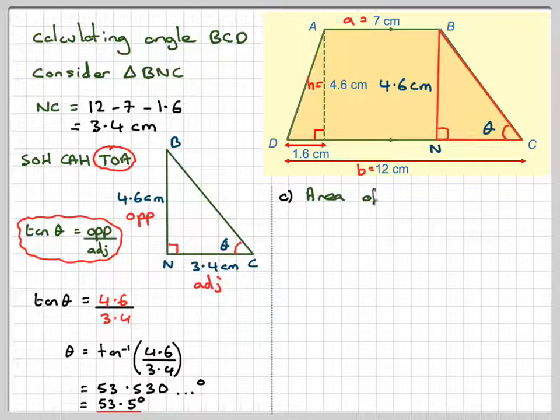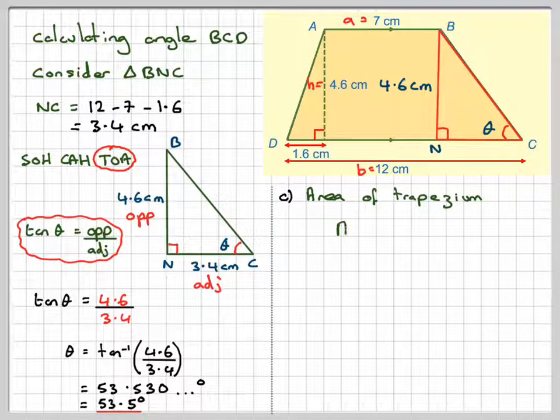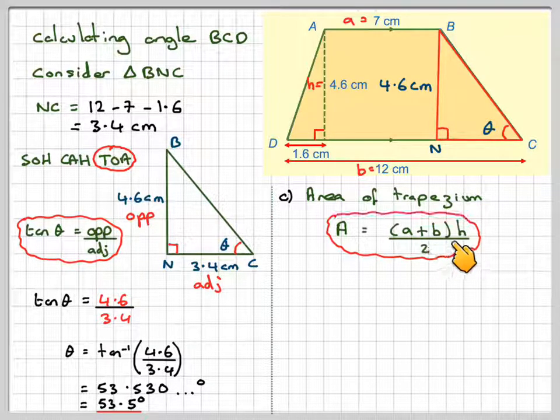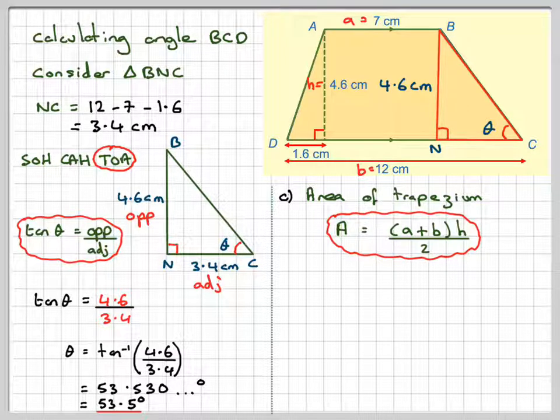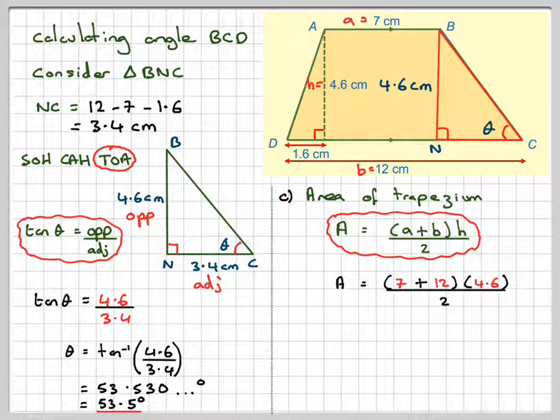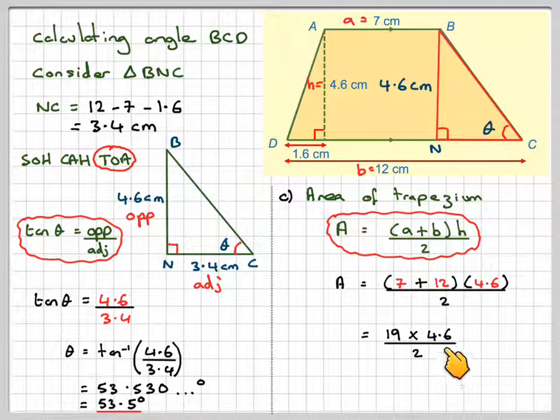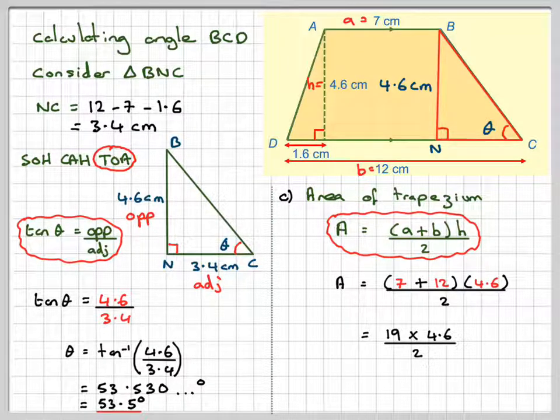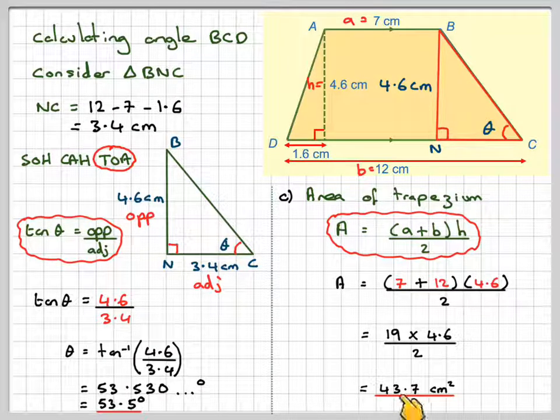So the area of a trapezium is going to be A plus B times H divided by 2. So A will be 7 plus B, which is 12, times the height, which is 4.6, divided by 2. So that gives 19 times 4.6 divided by 2, which gives an area of 43.7 centimetres squared.